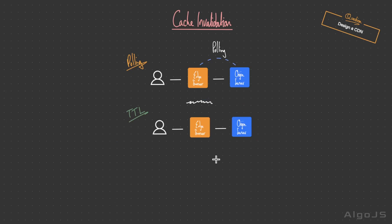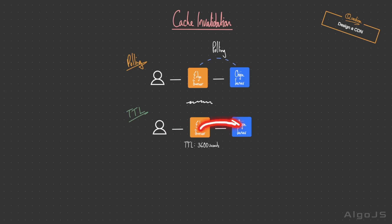A better solution is implementing a Time to Live (TTL) on edge servers, where each cached object is assigned a TTL duration indicating how long it can be considered valid before requiring an update. For example, a TTL of 3600 seconds — if a user requests content within the TTL, it's returned directly. If the TTL has expired, the edge server proxies the request to the origin server for updates. As a slight optimization where data consistency is not a priority, the edge server can return stale data immediately and asynchronously fetch fresh data from the origin in the background.